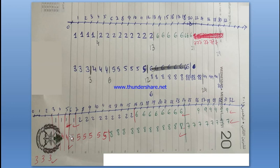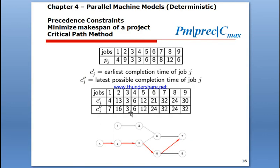We continue backward in the same way, writing down the numbers again. Where the earliest and latest possible completion times match, we identify the critical path. For example, steps three, four, and five have earliest and latest completion times of seven and eight. This identifies the critical path, giving us our complete critical path method solution.